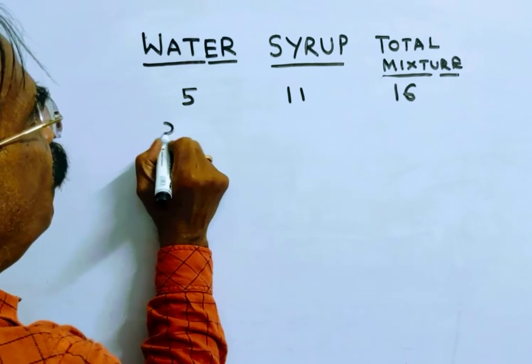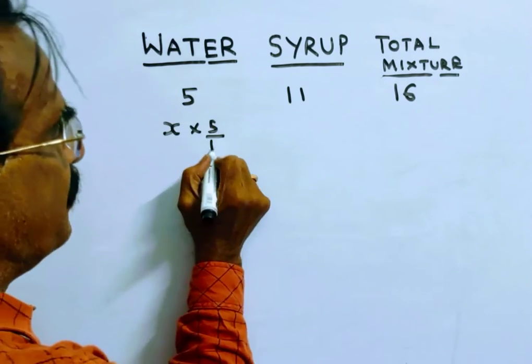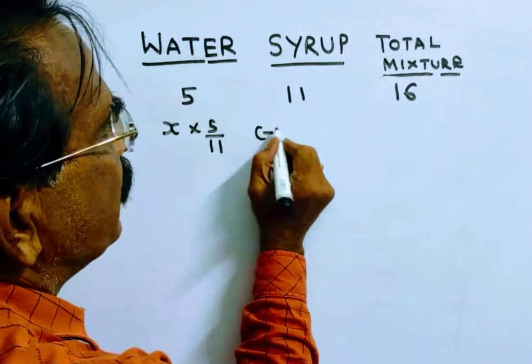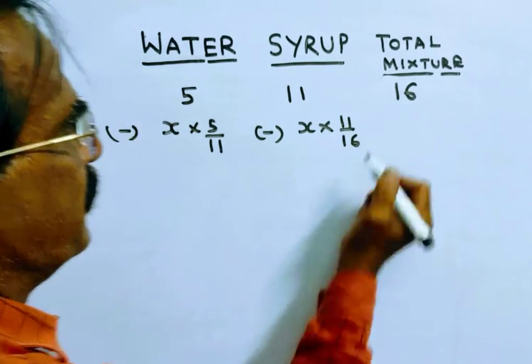So how much water comes out? x into 5 by 5 plus 11, which is 16. This much water comes out. And how much syrup comes out? x into 11 by 16.